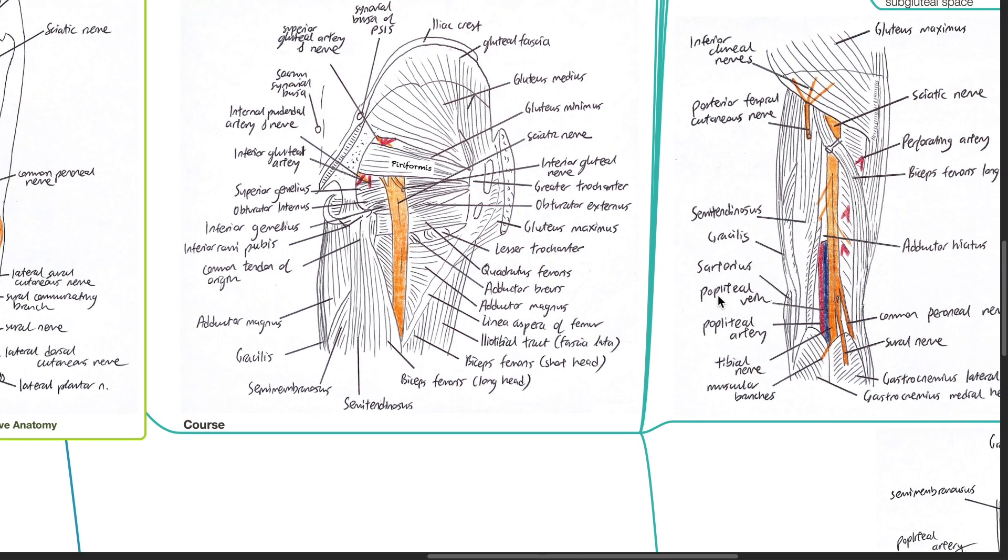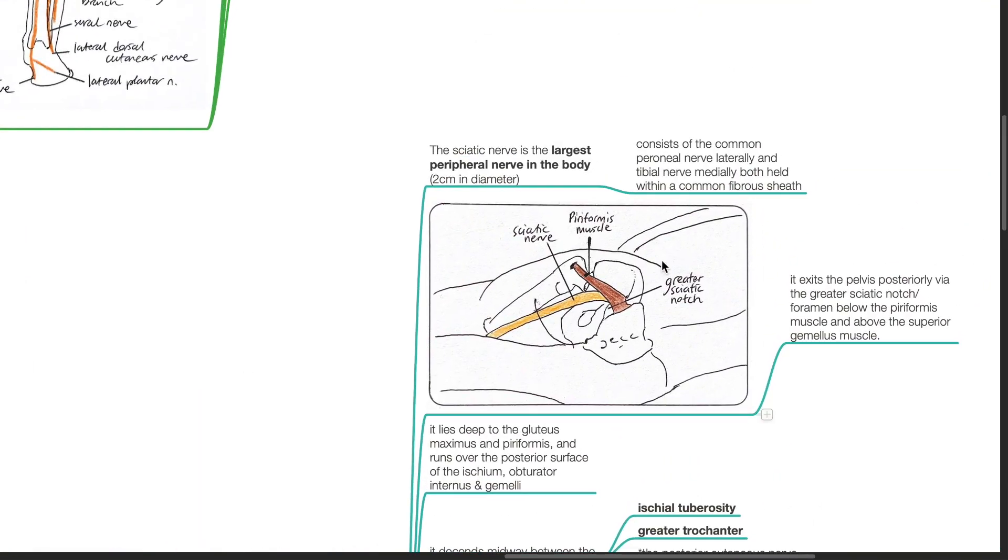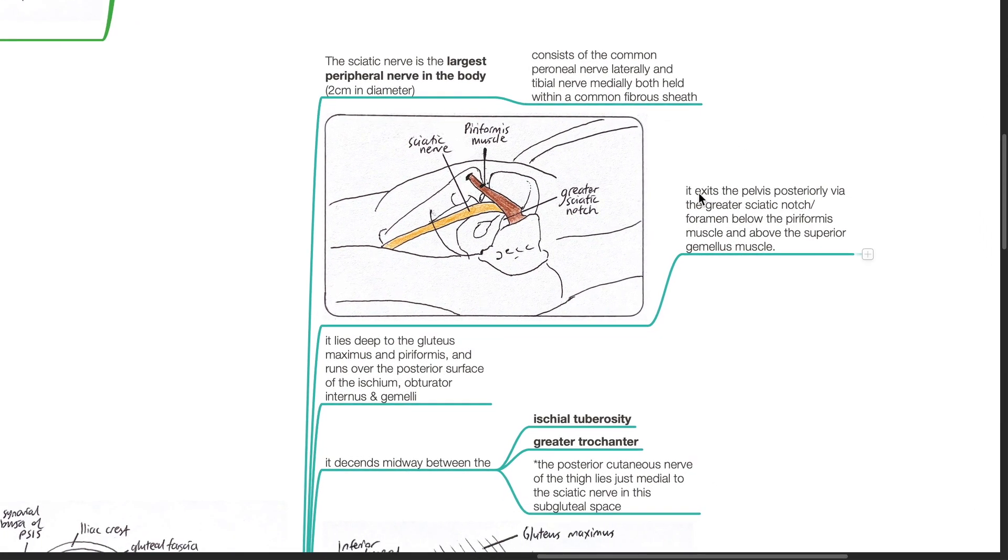Course. The sciatic nerve is the largest peripheral nerve in the body, up to 2 cm in diameter and consists of the common peroneal nerve laterally and the tibial nerve medially, both held within a common fibrous sheath. It exits the pelvis posteriorly via the greater sciatic notch, also known as the greater sciatic foramen, below the piriformis muscle and above the superior gamelius muscle.